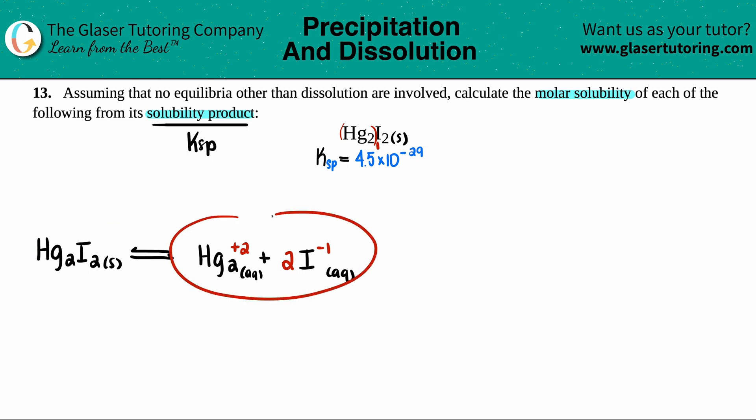And now that's my balanced equation, which I'm going to put off to the side for now. But I will use this to get the general Ksp formula. Remember, the general Ksp formula is this one right here.